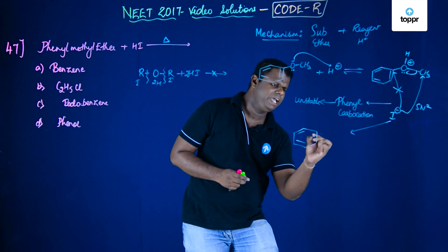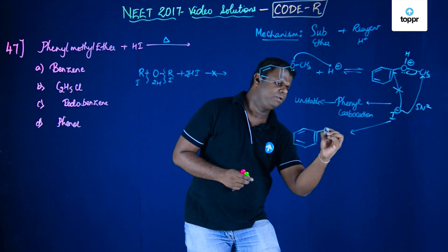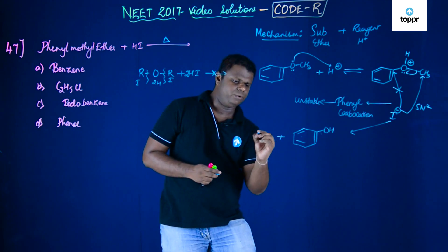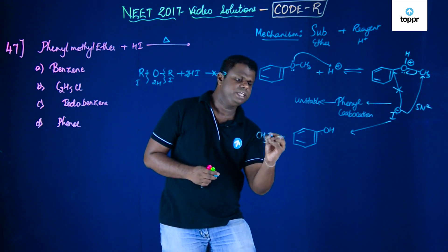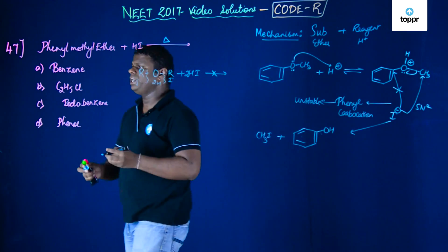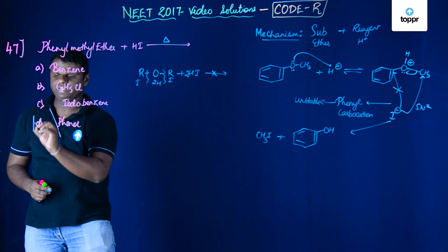You would be having phenol. I'm going to write OH plus methyl iodide. As you could see, the correct option for this particular question is option number D.